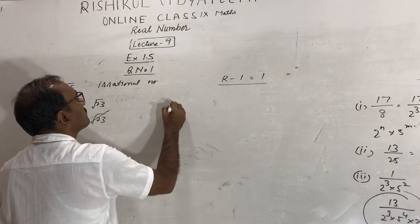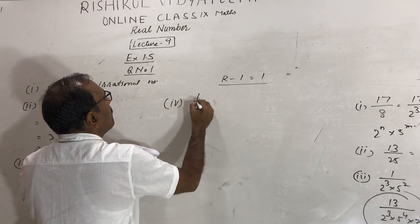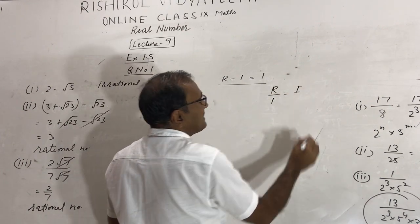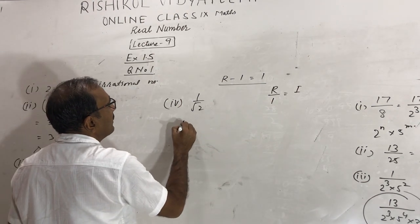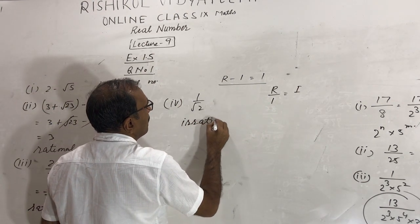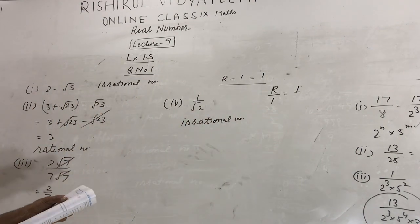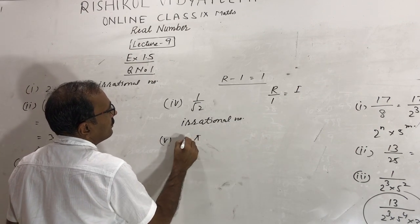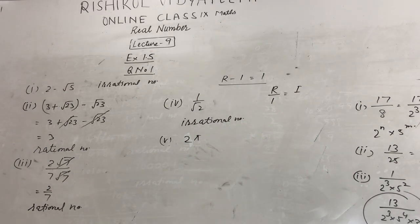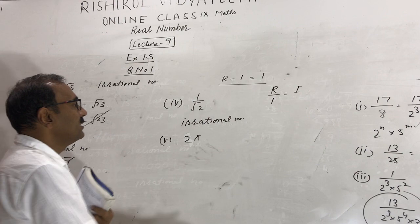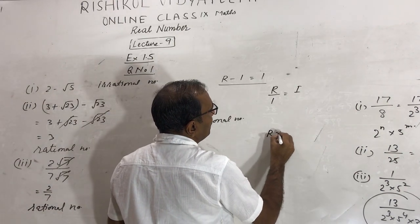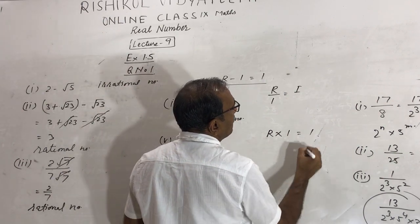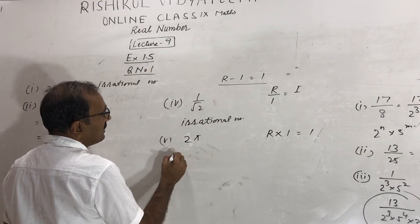Fourth: 1 upon √2 — this is rational divided by irrational, which is always irrational. So it is an irrational number. Fifth: 2π — here 2 is a rational number and π is an irrational number. The multiplication of a rational and an irrational is always irrational, so 2π is an irrational number.